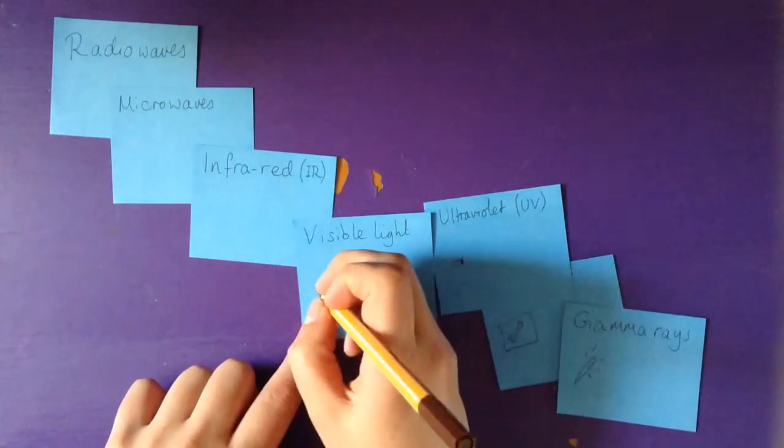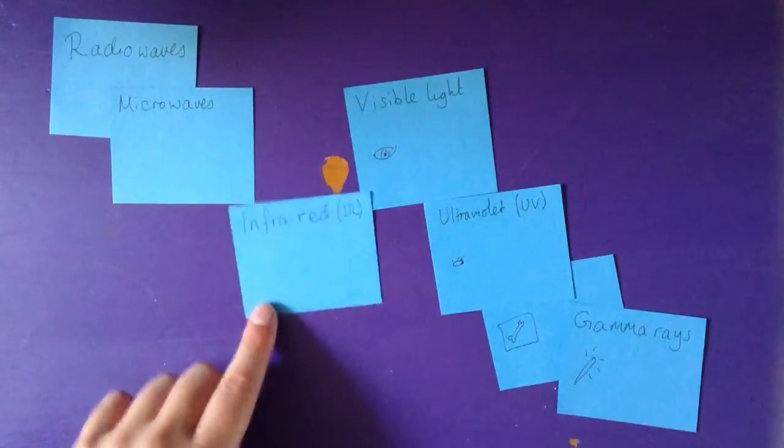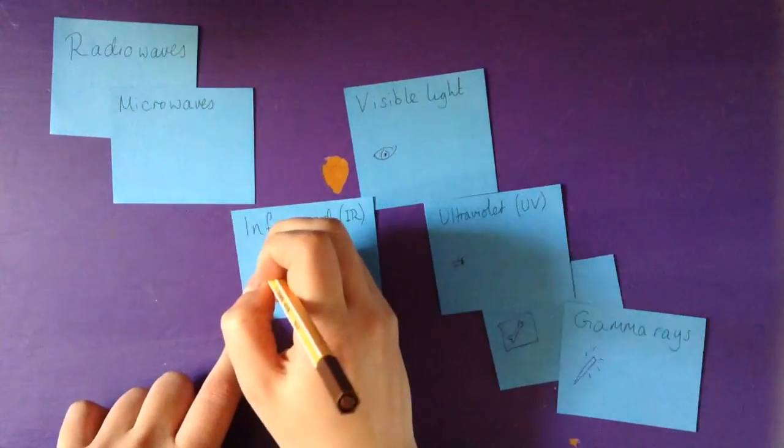Visible light is useful for seeing. Infrared can be used to see heat signatures.